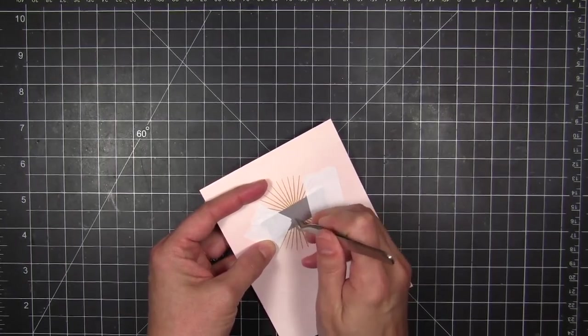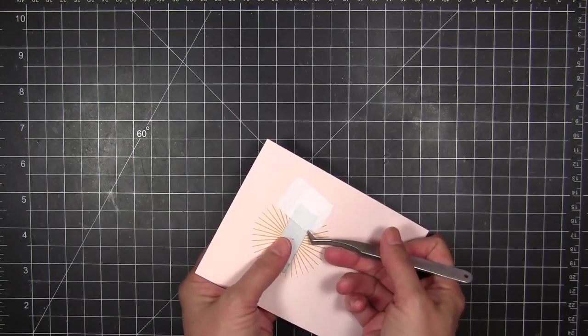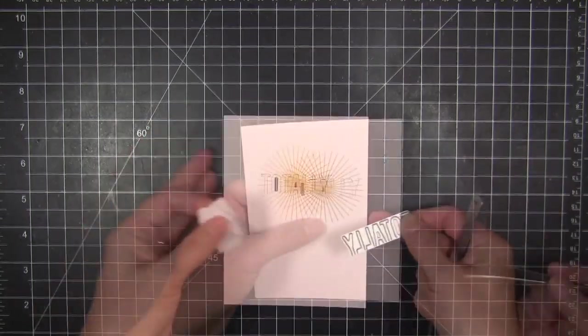And you can see that these letters in totally are hinged at the bottom. So it die cuts everywhere else, but along the bottom.